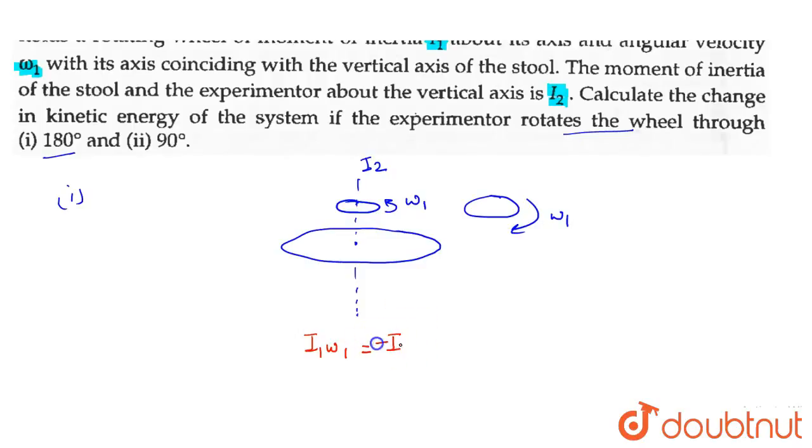If the experimenter rotates the wheel through 180 degrees, which means i1 and omega1, the angular momentum vector is in the downward direction. By the right-hand rule, if we consider omega2 to rotate the wheel, then it will be i2 and omega2.